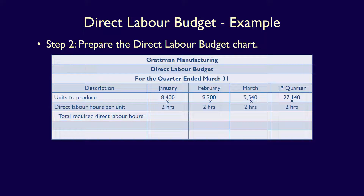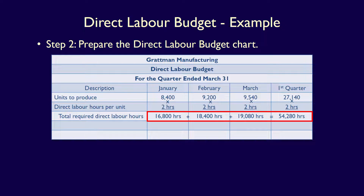Multiplying units to produce by direct labour hours per unit gives us the total required direct labour hours. For January: 8,400 units × 2 hours = 16,800 hours. For February: 9,200 units × 2 hours = 18,400 hours. For March: 9,540 units × 2 hours = 19,080 hours. For the first quarter: 27,140 units × 2 hours = 54,280 hours. Note that we can also verify this by adding the monthly hours: 16,800 + 18,400 + 19,080 = 54,280 hours. This can be used as a check to ensure you calculated the total correctly.